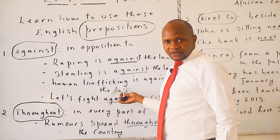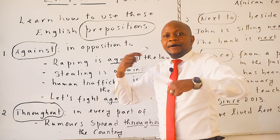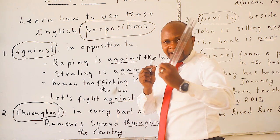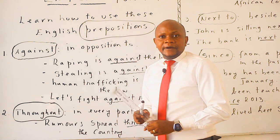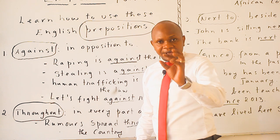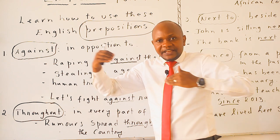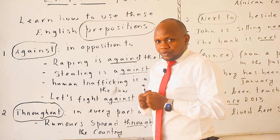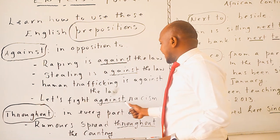Human trafficking is against the law. Drugs are against the law — if you take illegal drugs, you will be arrested. These are examples of how we use 'against.' Let's fight against racism.